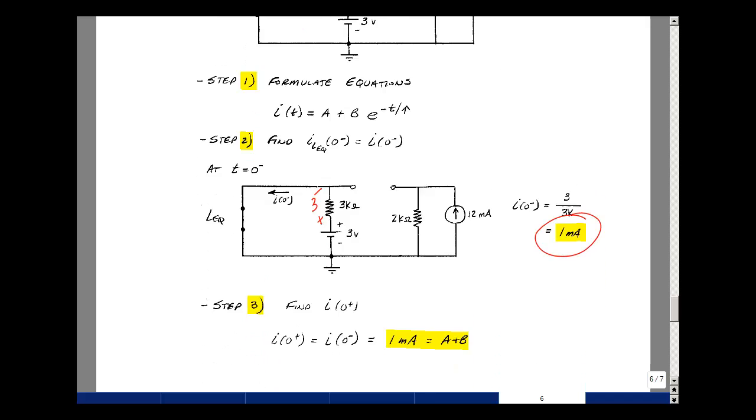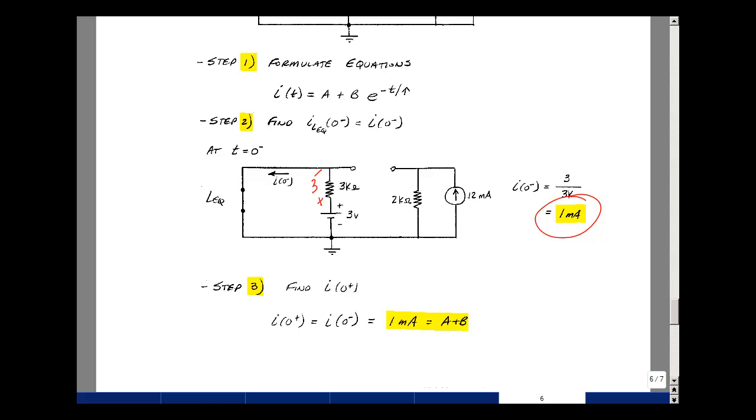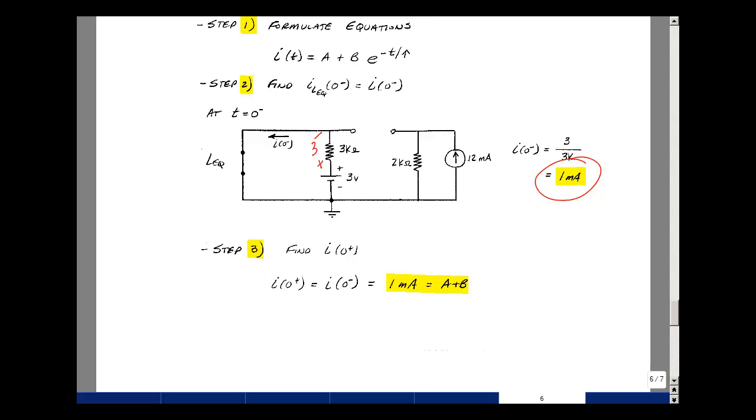Step 3 is to have the switch change state. But the current in the inductor cannot jump instantaneously, so that has to equal a plus b times e to the 0, which is just equal to 1, so it's just a plus b. So one equation, two unknowns.